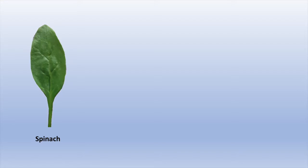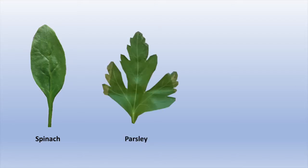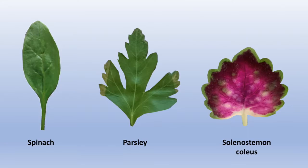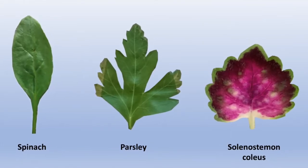Spinach leaves were used due to their great vascular network pattern. Parsley shows a high porosity. The third plant, Solenostemon Coleus, shows a compact geometry and has great ability to store water.